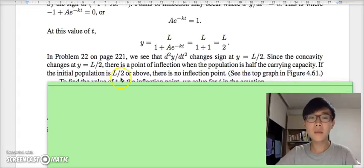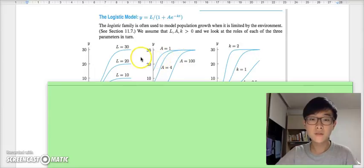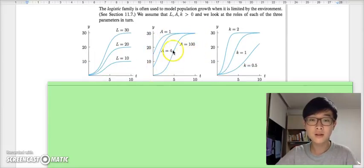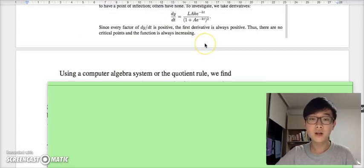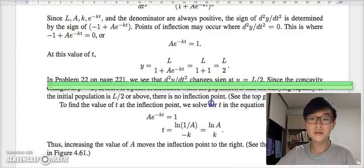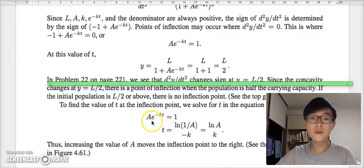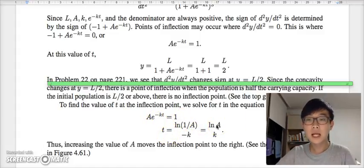If the initial population is L/2 or above, then there exists no inflection points. If not, there is. See here? Inflection point does not happen on this curve while it does on this curve. To find the value of t at the inflection point, we also have to go through simple algebraic manipulation, which ends up with t being ln(A)/k.